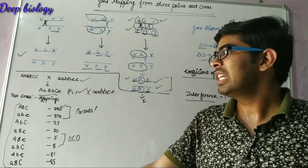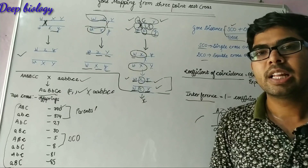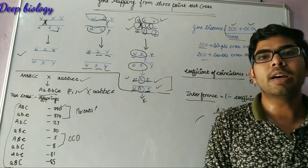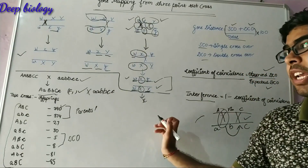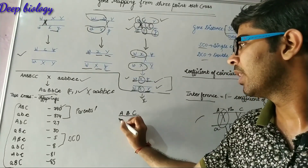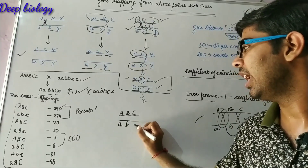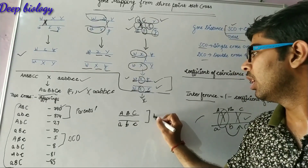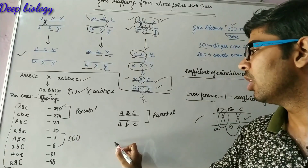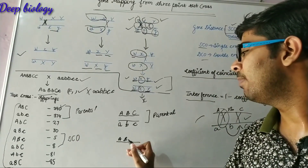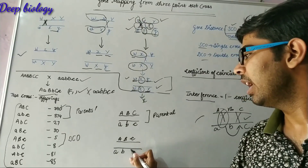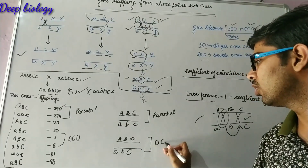First, we need to find the order of genes, specifically the middle gene. We write out the parental type: capital A, capital B, capital C and small a, small b, small c. We also write the double crossover products, which appear in the lowest numbers: capital A, capital B, small c and small a, small b, capital C.